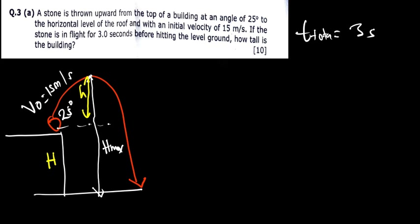Understanding the question is very important in physics. How tall is the building — we are finding capital H, because H is the distance from the ground level to the top of the building. H_max is the result of capital H plus small h. The question wants capital H specifically, not small h and not H_max directly.